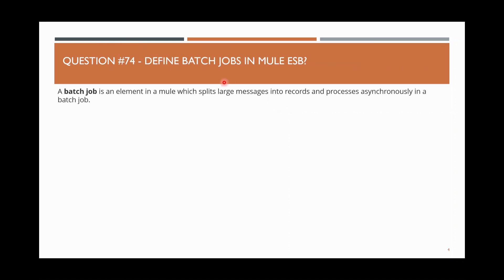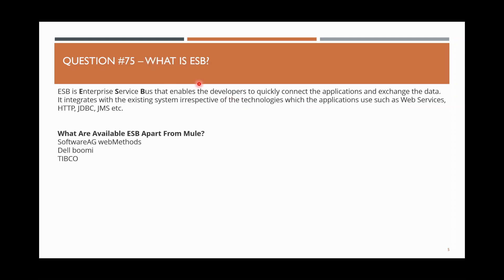Next question: define Batch Jobs in Mule ESB. A Batch Job is an element in Mule which splits large messages into records and processes them asynchronously. For example, if you have 100,000 records and use For Each, it processes sequentially one by one. But with a Batch Job, you split all records into small chunks and process them in parallel asynchronously.